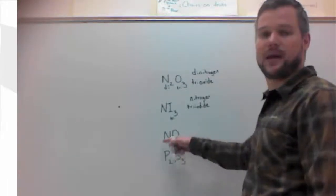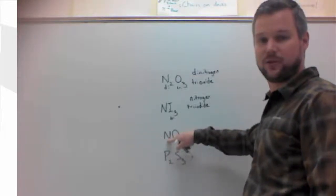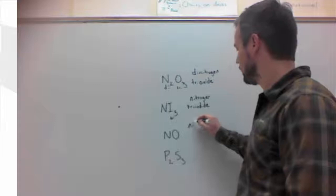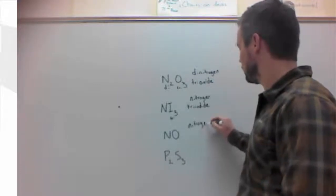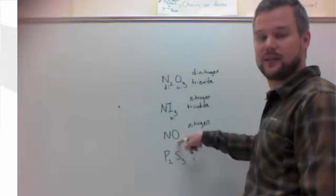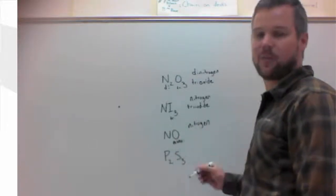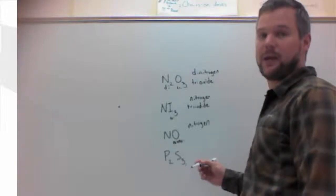Third problem. Again, nonmetal to nonmetal. No prefix on the first atom, so nitrogen gets its full name. The second atom has a subscript of one. It's an imaginary subscript. The second atom always gets a prefix, so it's going to be mono.